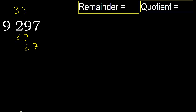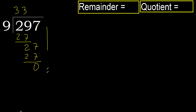9 multiplied by 3 is 27, which is not greater, ok. Subtract: 27 minus 27 equals 0. Next digit — there is no next digit, therefore finish.